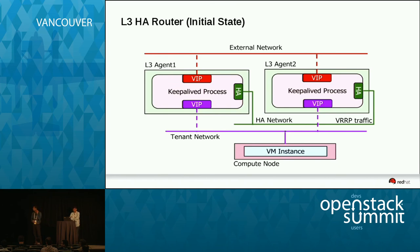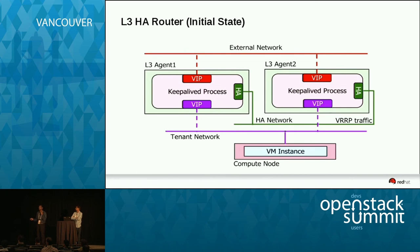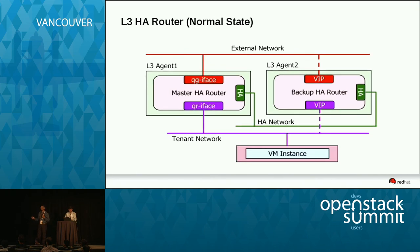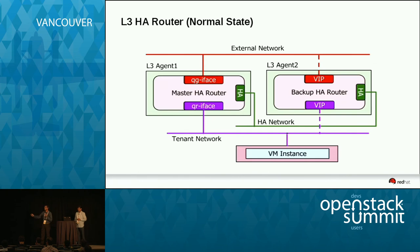Once the router namespace is created, a keepalived configuration file is generated on each L3 agent and the keepalived process is started. A master router is then selected and becomes active. This diagram shows an HA router scheduled on two L3 agents — L3 agent 1 and L3 agent 2 — where L3 agent 1 has become the master, and all QR interfaces have the proper IP addresses so that VM traffic can be routed through.